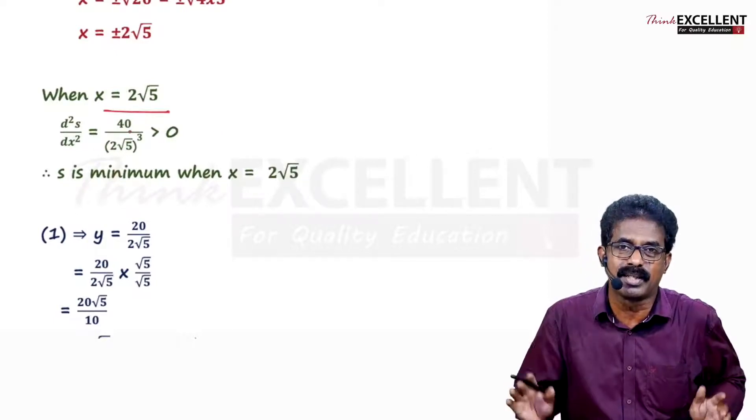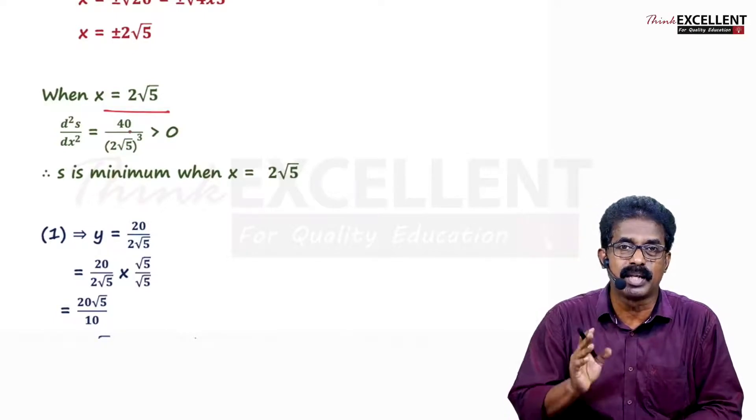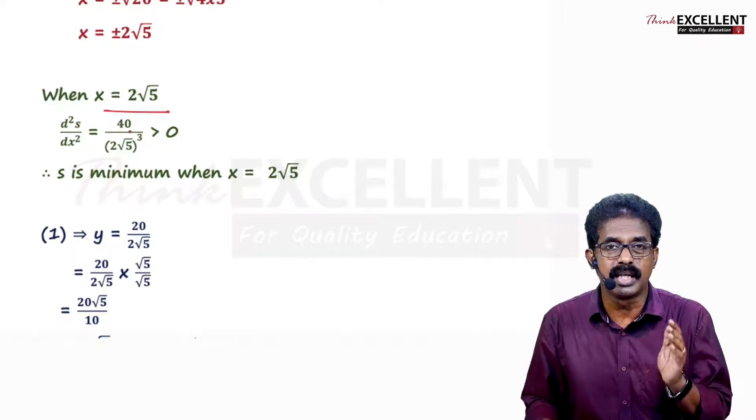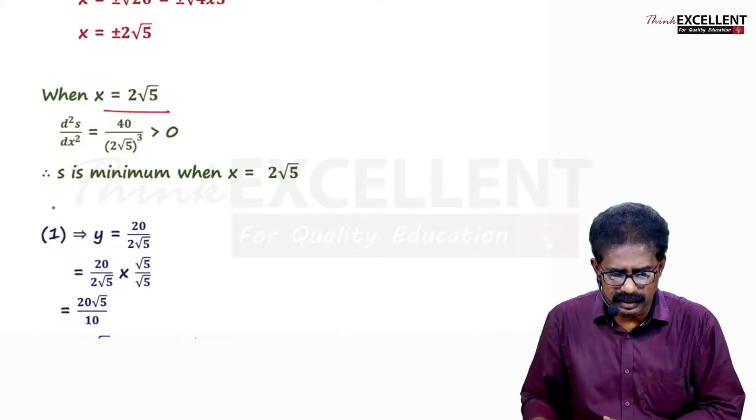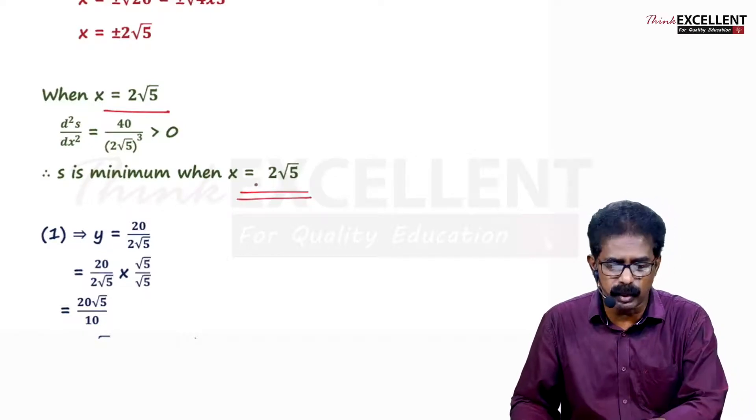There is no negative sign at all. We are not bothered about the answer. We have to check whether it is positive or negative. It is positive. Second derivative positive, so you say S is minimum. Sum is minimum when x equals 2 root 5. This is x value. We have to find y also.